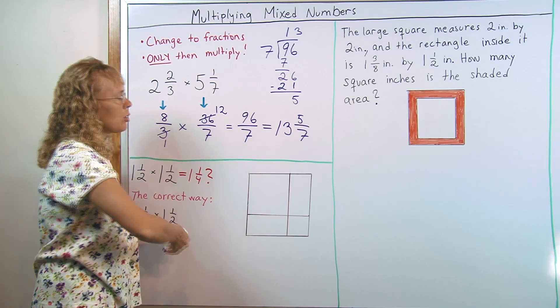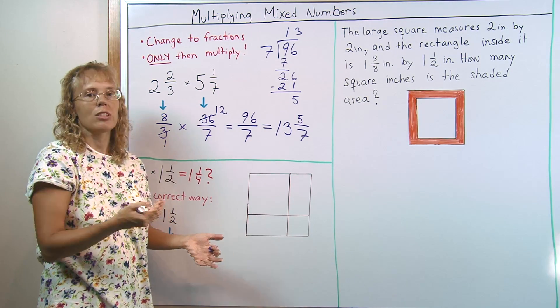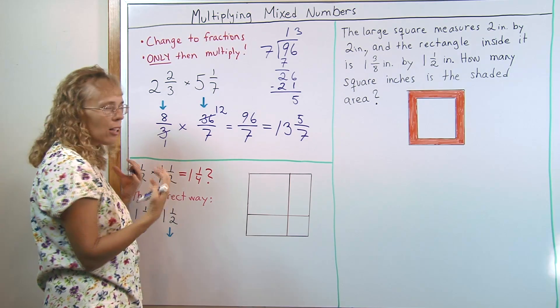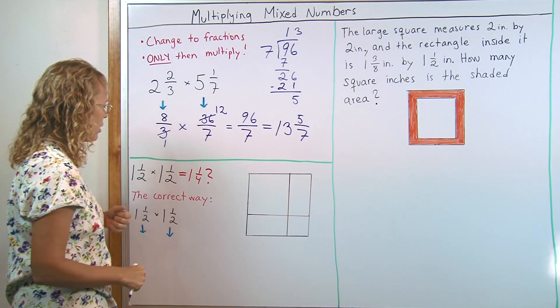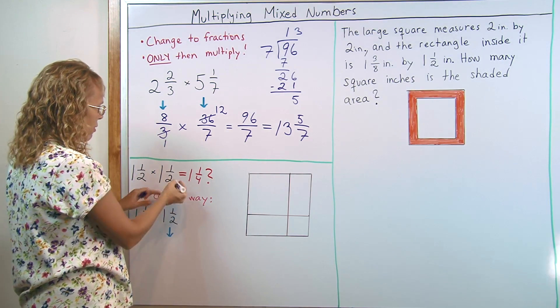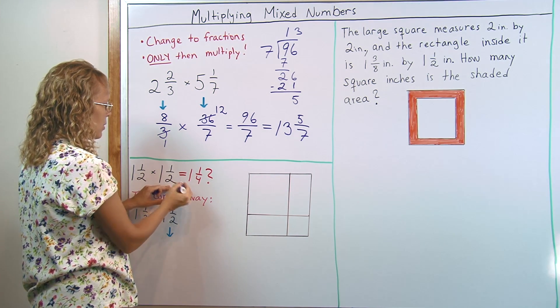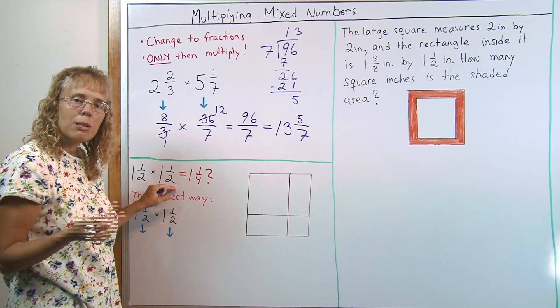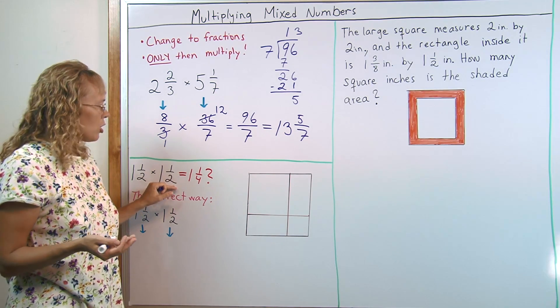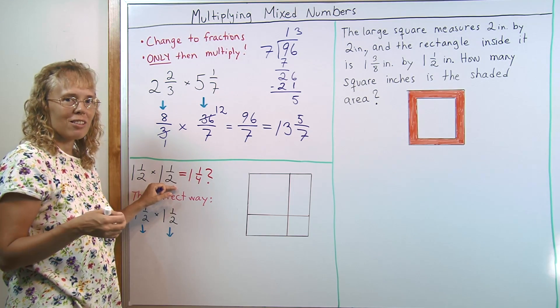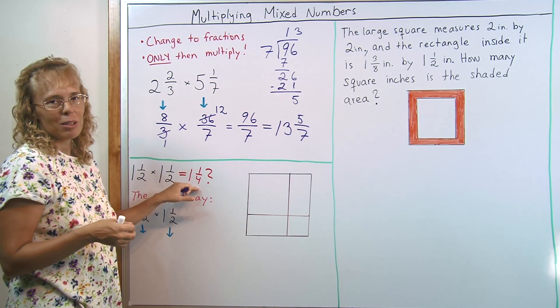So here's an example to try to combat that misconception. That 1 and 1/2 times 1 and 1/2 cannot equal 1 and 1/4. Just think of it this way. Let's say you have a recipe that has 1 and 1/2 cups of flour. And then you want to take that recipe 1 and 1/2 times. Surely your recipe will have more than 1 and 1/2 cups of flour then, and not less.